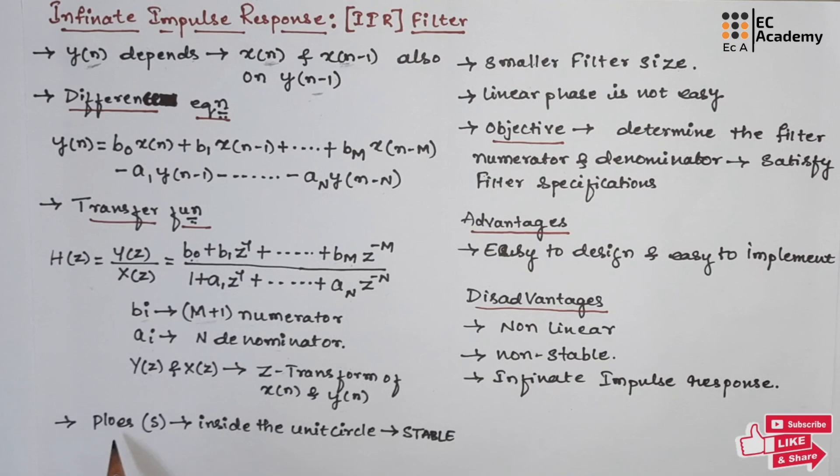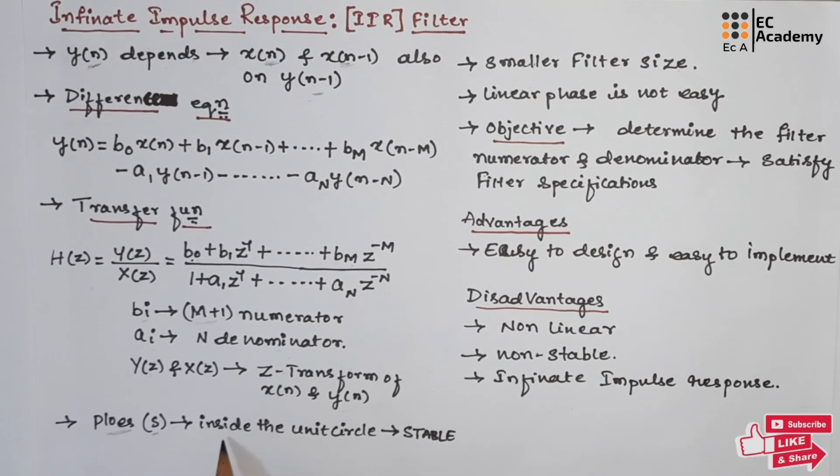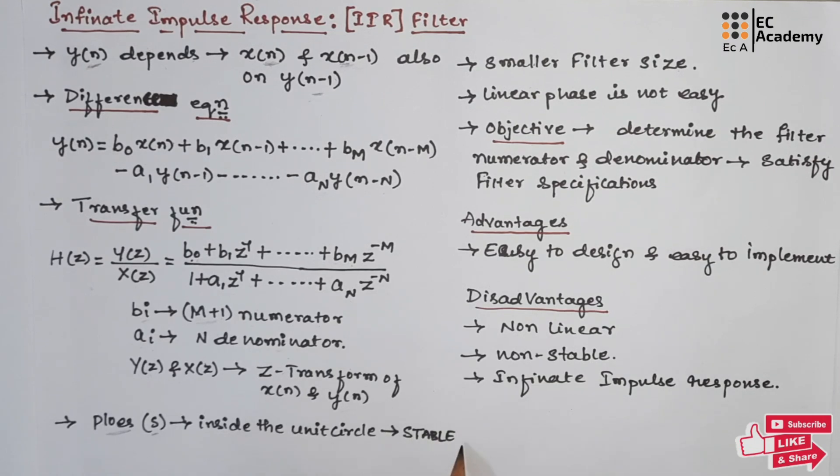Since the transfer function is having the denominator polynomial, which we call as poles, these poles should be inside the unit circle so that the filter should be stable. If the filter needs to be stable, then these poles should be inside the unit circle.